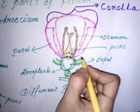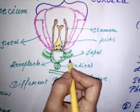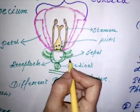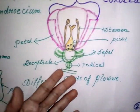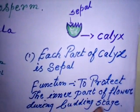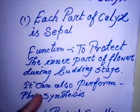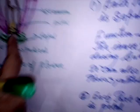Calyx is the outermost green circle of the flower. Each part of calyx is known as sepal. The function of calyx is to protect the inner part of flower during the budding stage. Besides this, it can also help in photosynthesis due to the presence of chlorophyll.